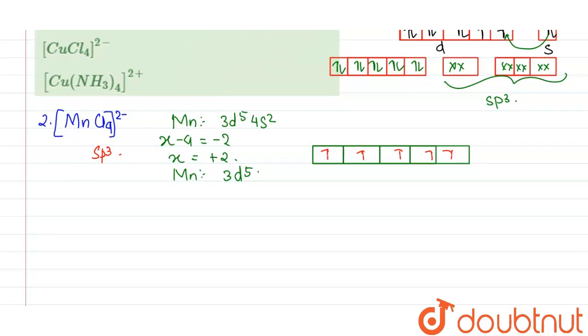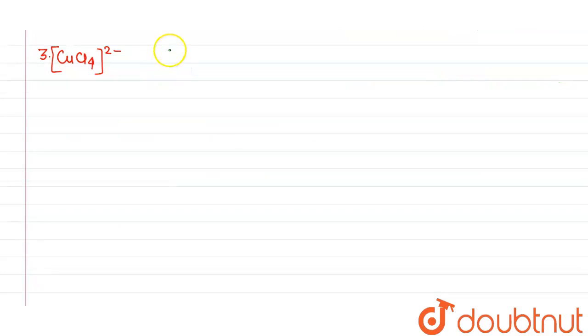Now the next one is CuCl4 2-. So the outer electronic configuration of Cu is 3d10 4s1. Now we need to calculate the charge present on this. So it will be X minus 4 equals minus 2 as this chlorine has a charge of minus 1. So it comes out to be minus 2 plus 4, hence plus 2. So copper is in plus 2 oxidation state here, which means this has 3d9 electrons.